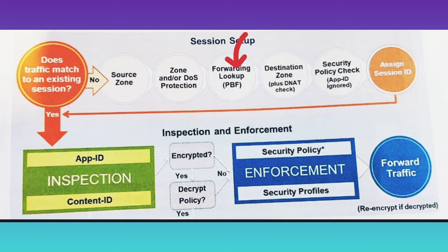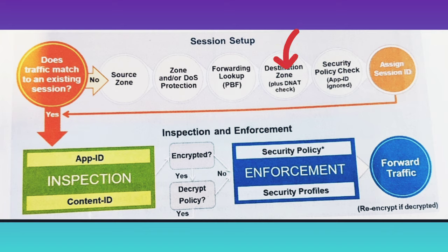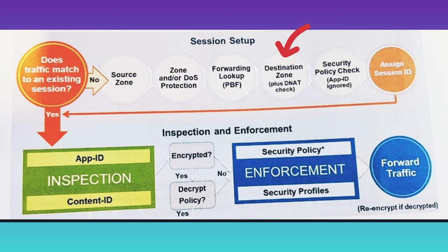Once the packet is checked against the forwarding lookup and PBF, it is then checked for the destination zone and also checked if destination NAT is needed. Destination NAT is performed on incoming packets when the firewall translates a destination address to a different destination address — for example, translating a public destination address to a private destination address.